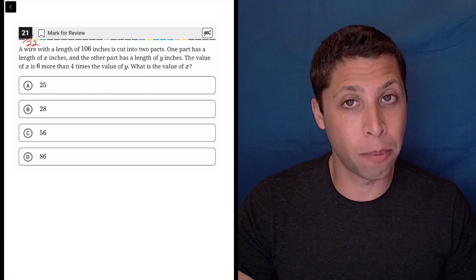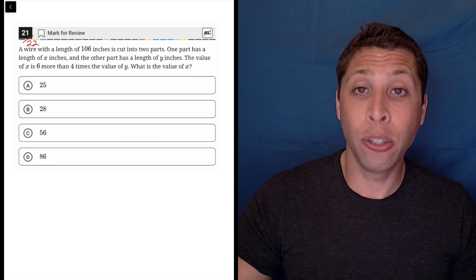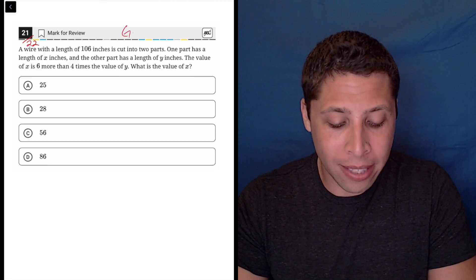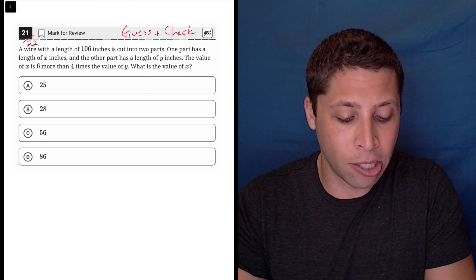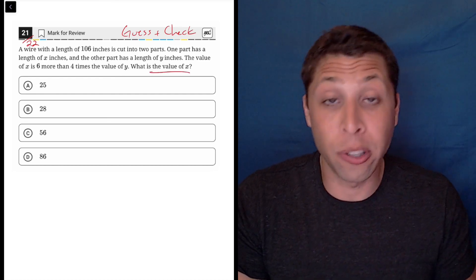There might be some traps, some things to watch out for. We also have a little bit of a story and that usually means there are traps and it's hard to think about. My instinct would be maybe we can guess and check here. These answer choices seem pretty straightforward, they're just numbers and they're the values of X.